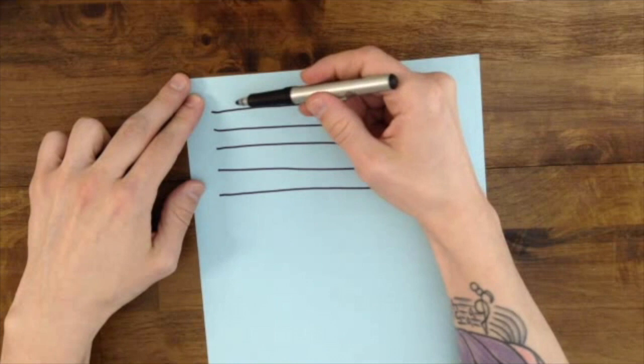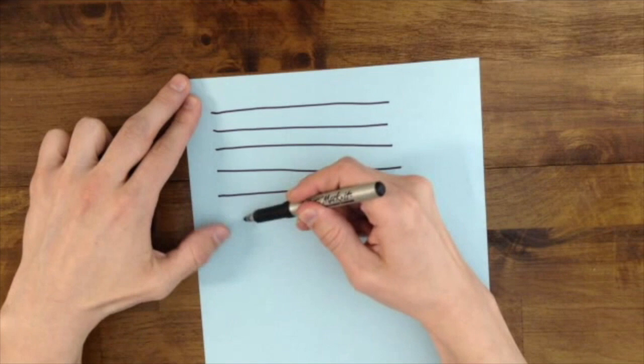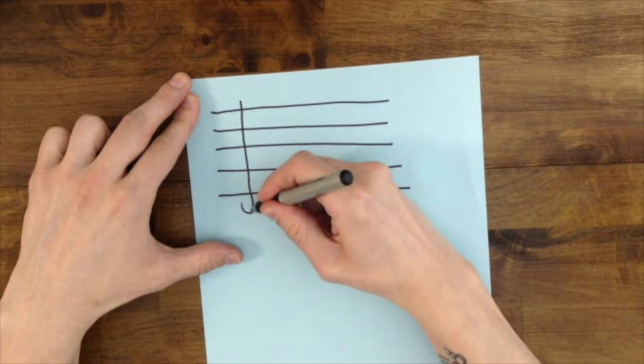Alright, next, you'll want to draw a straight line from the top of the staff all the way to the bottom, and we'll do a little bit of a hook at the end. From the top to the bottom with a little hook at the end.